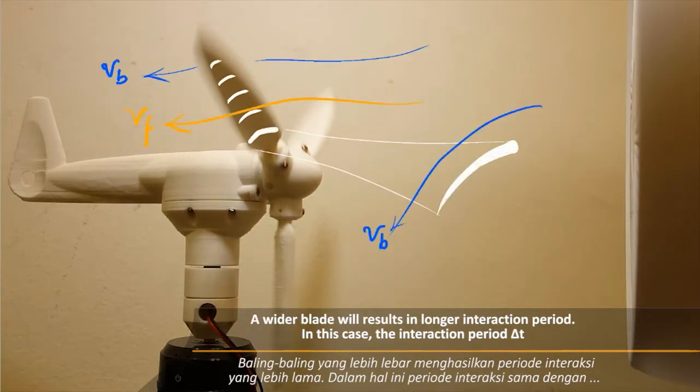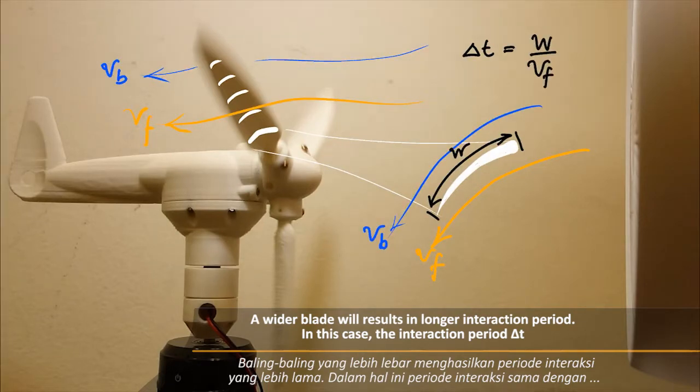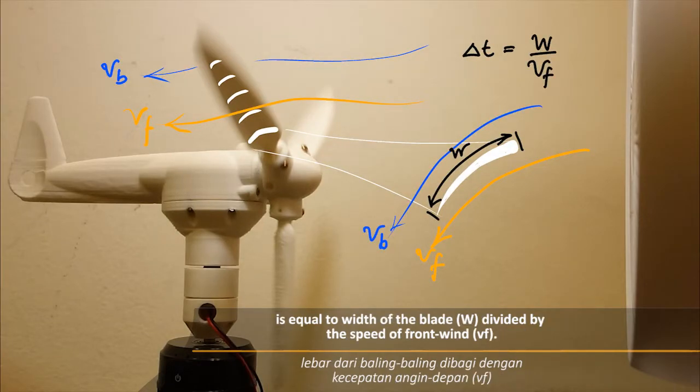A wider blade will result in longer interaction period. In this case, the interaction period delta t is equal to the width of the blade, w, divided by the speed of the front wind, vf.